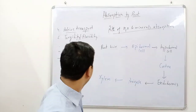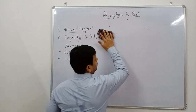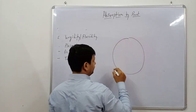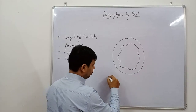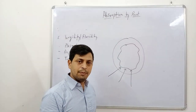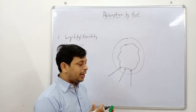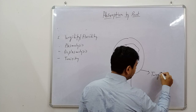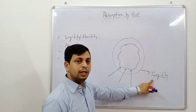Next are the terms: turgidity, flaccidity, and plasmolysis. When water goes inside a cell through osmosis, diffusion, imbibition, or active transport, the cell absorbs water and swells up. This phenomenon is called turgidity — when the cell is fully swollen, that condition is called turgidity.